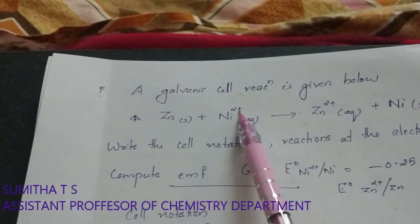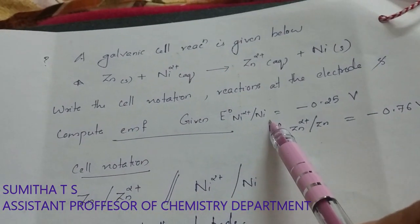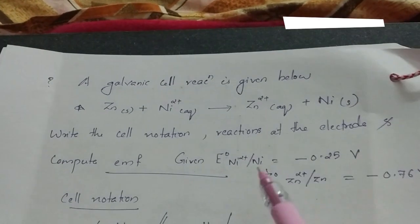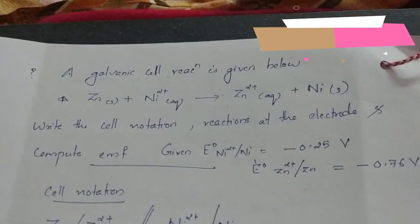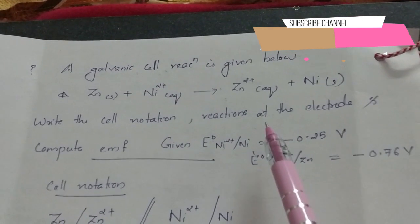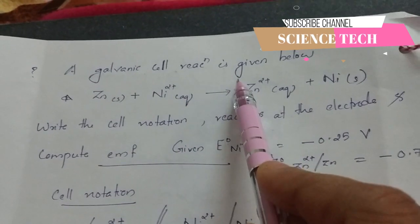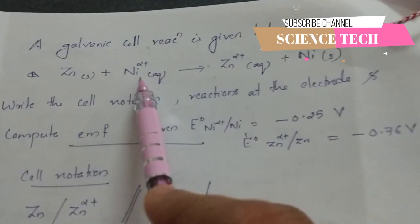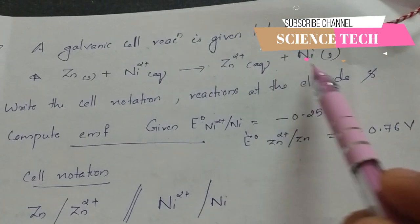How much of the electrode potential? I will ask you a question about the exam. A galvanic cell reaction is given by Zn plus Ni2+ gives Zn2+ plus Ni.